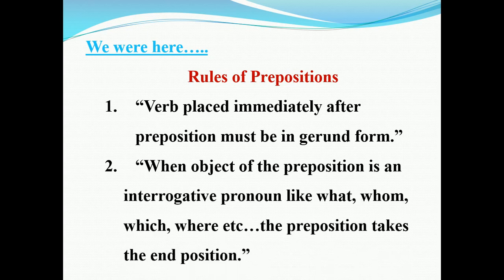The second rule says, when the object of the preposition is an interrogative pronoun like what, whom, which, where, etc., the preposition takes the end position. So, if you are using interrogative pronouns like what, whom, which, where, the preposition will be used at the end of that particular sentence. That's the second rule.